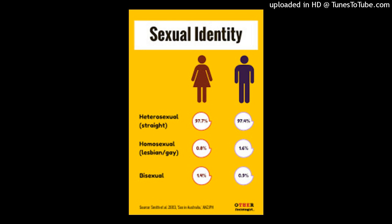First, sexual orientation. Sexual orientation refers to a person's capacity for sexual feelings and emotional and sexual attraction to a particular sex — male or female. Sexual orientation is typically divided into four categories: heterosexuality, attraction to individuals of the opposite sex; homosexuality, attraction to individuals of the same sex; bisexuality, attraction to individuals of either sex; and asexuality, no attraction to either sex.